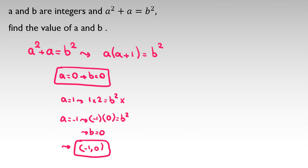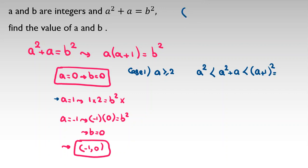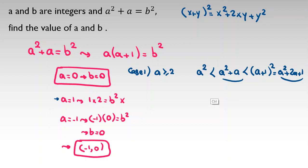Now consider two cases. Case one: suppose a is positive. Since we've already checked a=1, we can say a is at least two. Then a times (a plus one), or a squared plus a, is strictly greater than a squared and less than (a plus one) squared, because by the identity (a+1)² equals a squared plus two a plus one, which is obviously greater.